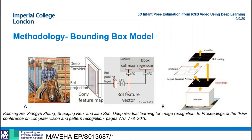The first step as previously outlined was the cropping of the input image according to the bounding box of the infant. This ensures that the input to the 2D pose estimation model has a subject of consistent scale and also removes extraneous background noise.